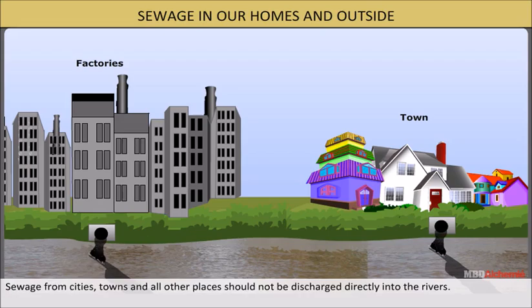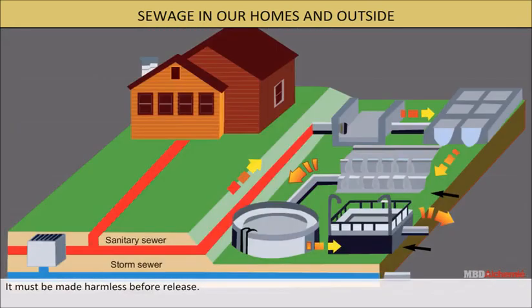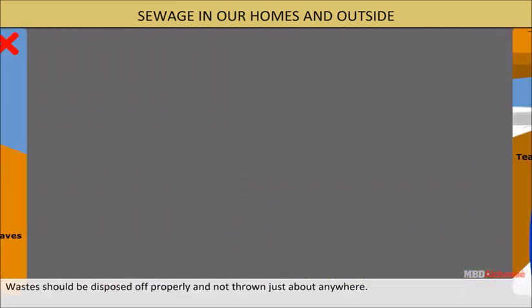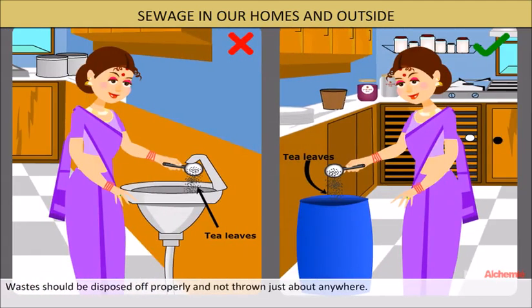Sewage from cities, towns, and all other places should not be discharged directly into rivers; it must be made harmless before release. Used cotton, tea leaves, sanitary towels, etc., should be thrown in the dustbin and not in the drains.